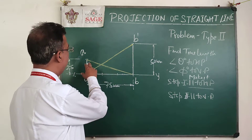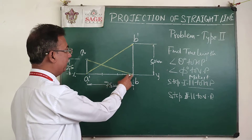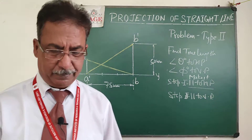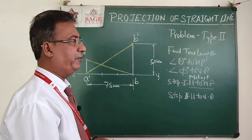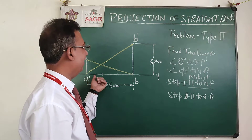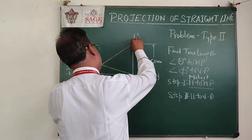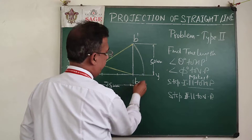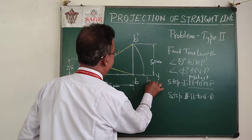For making it parallel to VP, I can hold end A and move B upside, or hold point B and rotate A. This time I am going to solve it in a slightly different way — changing the fixed point each time. Firstly, to make the line parallel to HP, meaning the front view will be parallel to XY, I keep A dash fixed and rotate B dash downside to a new point called B one dash.